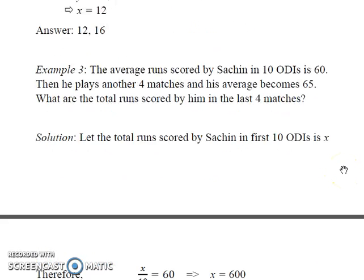Let us look at the last example. The average runs scored by Sachin in 10 one-day internationals is 60. Then he plays 4 matches and his average becomes 65. We need to find out the total runs scored by him in the last 4 matches.